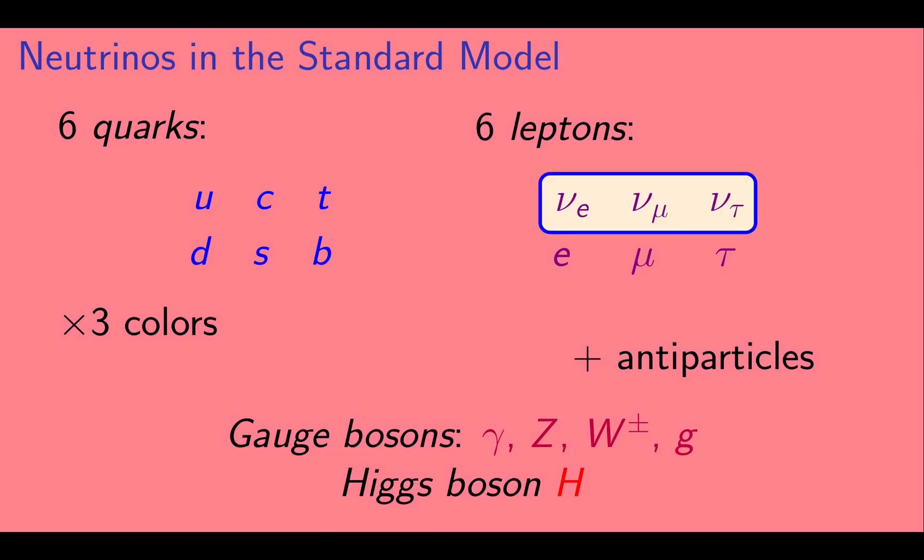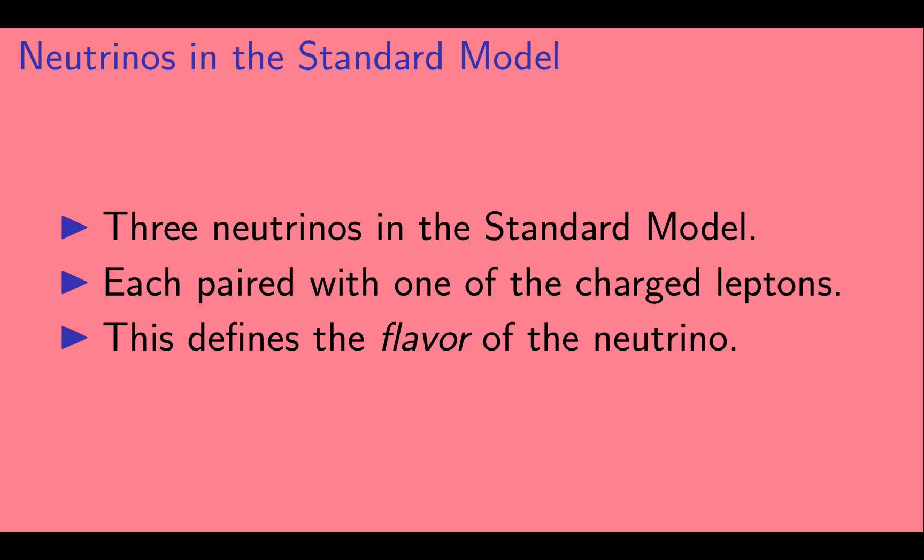Here, we're interested in the neutrinos, which are three of the six leptons. As we saw in the previous slide, there are three neutrinos in the standard model. Each neutrino is paired with one of the charged leptons. This defines the flavor of the neutrino.